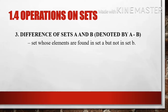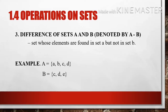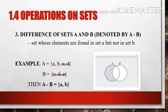The third operation on sets is the difference of sets A and B, denoted by A − B — a set whose elements are found in set A but not in set B. For set A = {A, B, C, D} and set B = {C, D, E}, we take elements in set A and disregard all elements in set B as well as their common elements. So A − B = {A, B}, and this can be represented in a Venn diagram.